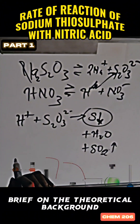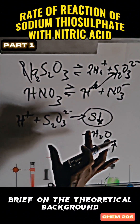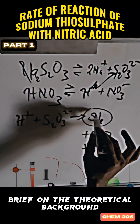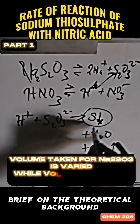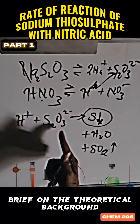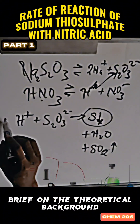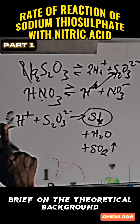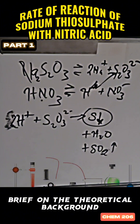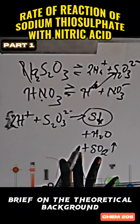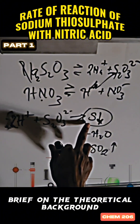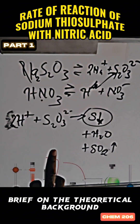This is a first-order reaction because we are interested in just one species. The concentration or volume of thiosulfate will be varied, while that of the nitric acid will be kept constant. The balanced equation has two sulfur atoms and two hydrogens on each side. The rate of reaction is determined by measuring the time it takes for the sulfur precipitate to form.